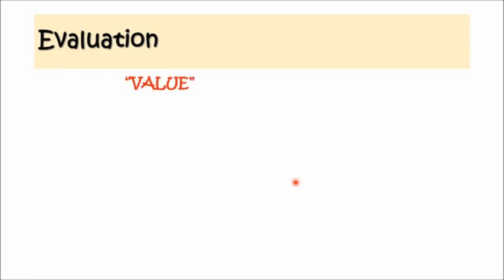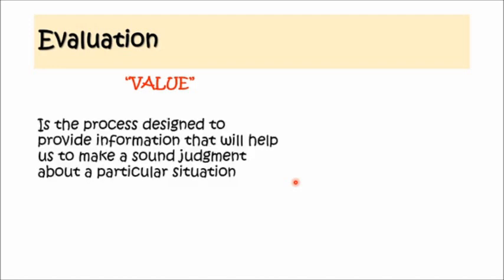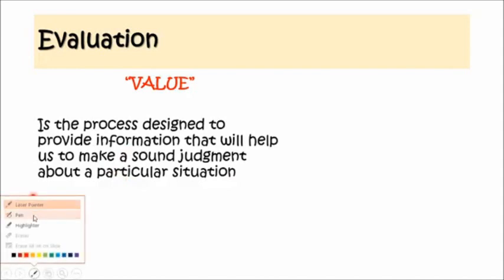How about evaluation? Evaluation originates from the word 'value.' When we evaluate, we expect the process to give information regarding the worth, the appropriateness, the goodness, the validity, or the legality of something for which a reliable measurement has been made. Evaluation is a process designed to provide information that will help us make a sound judgment about a particular situation. Take note of the word 'judgment.'